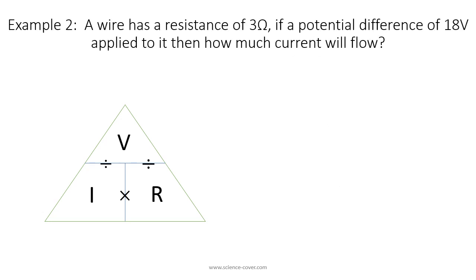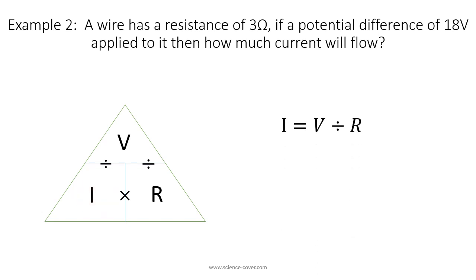In example 2, a wire has a resistance of 3 ohms. If a potential difference of 18 volts is applied to it, how much current will flow? We're asked for current, so cover up I and it's the voltage divided by the resistance: I = V / R. Substituting in, we get 18 divided by 3, which is 6 amps.